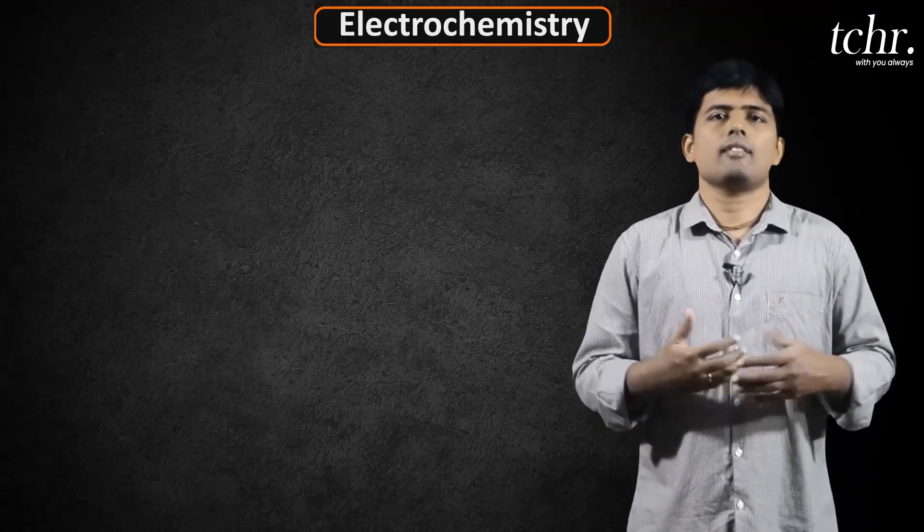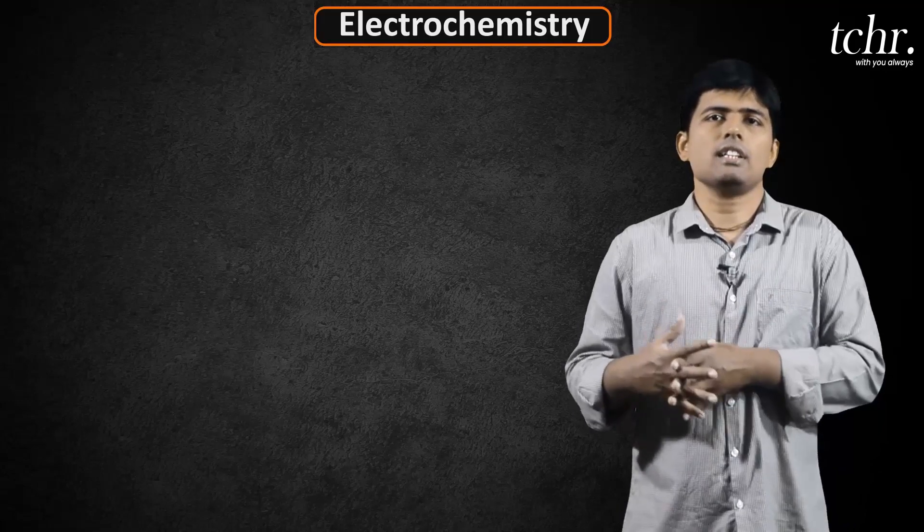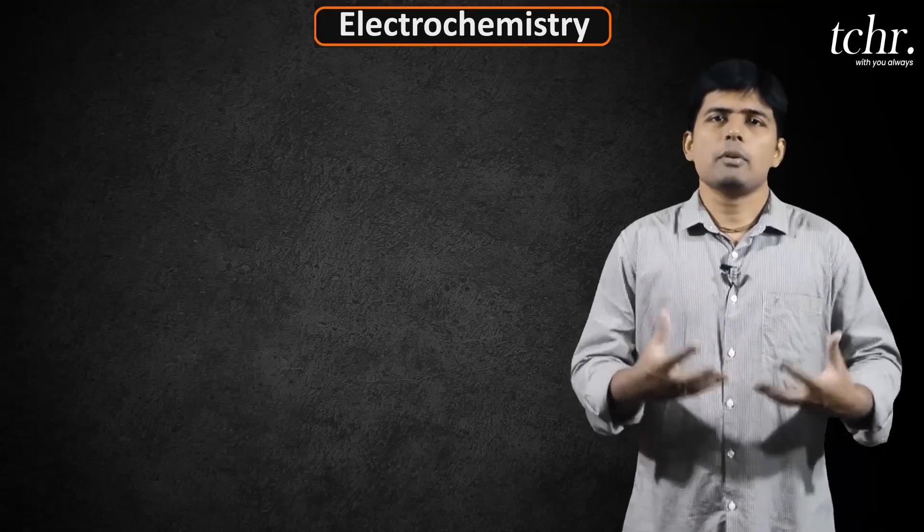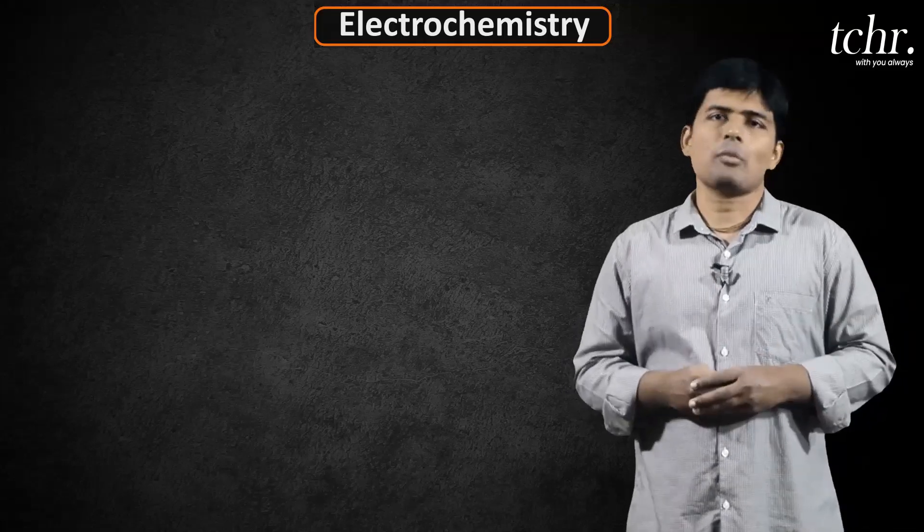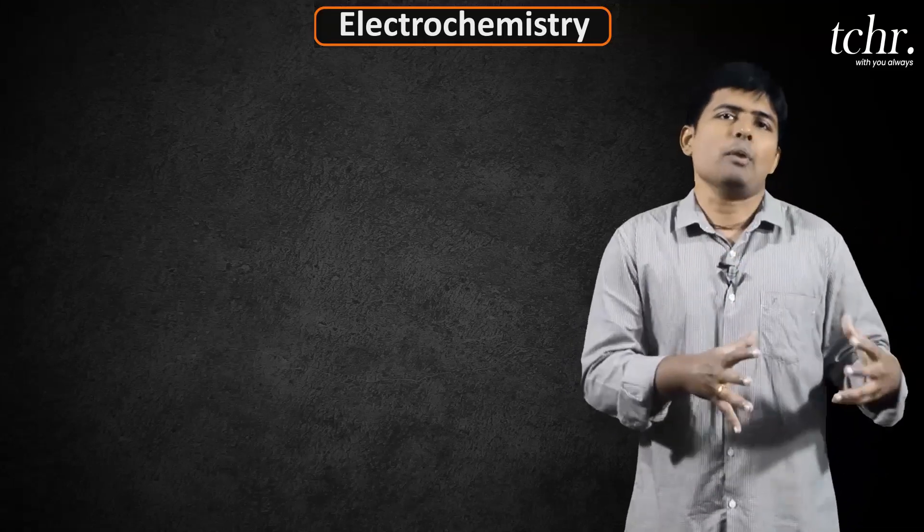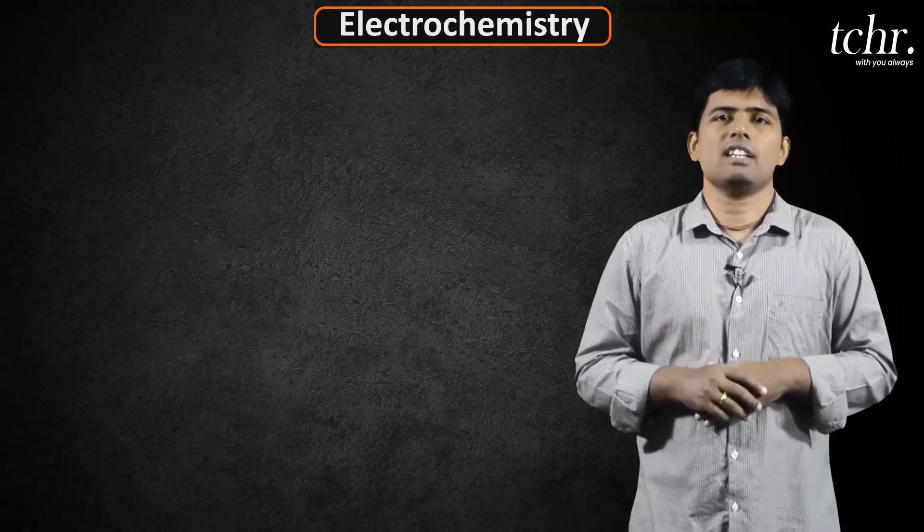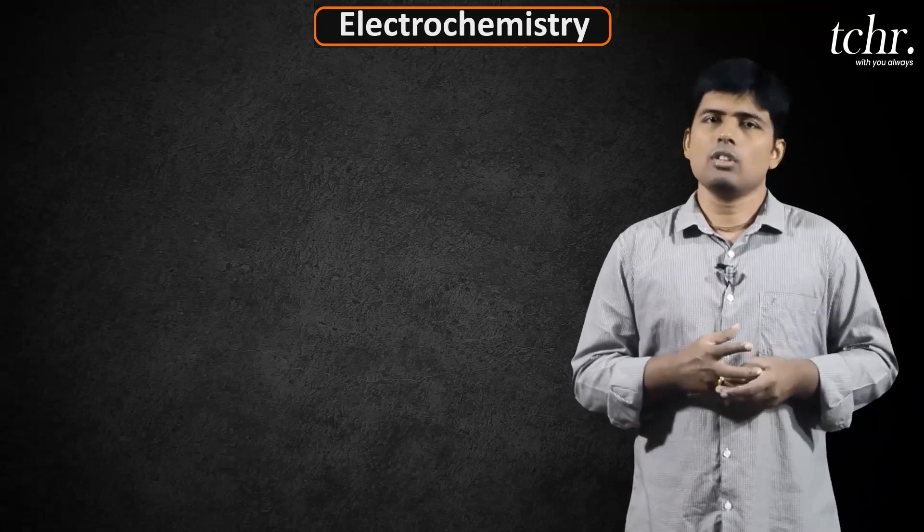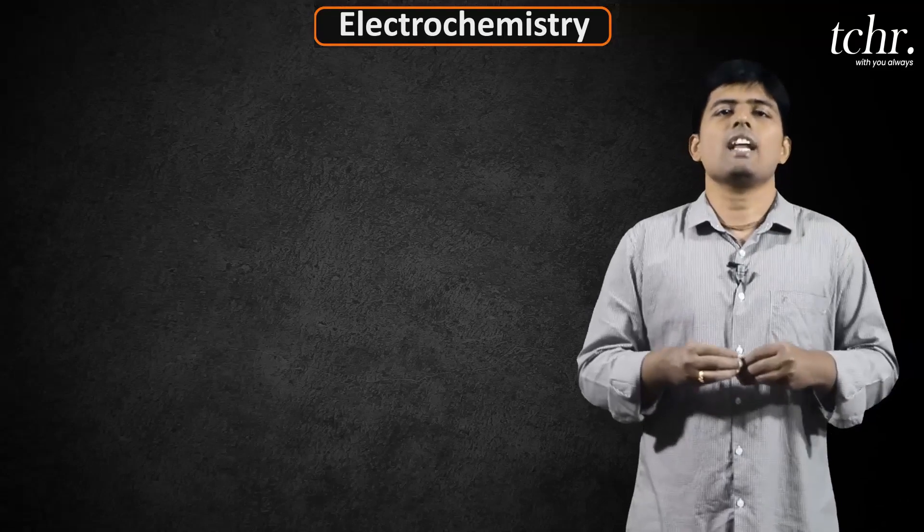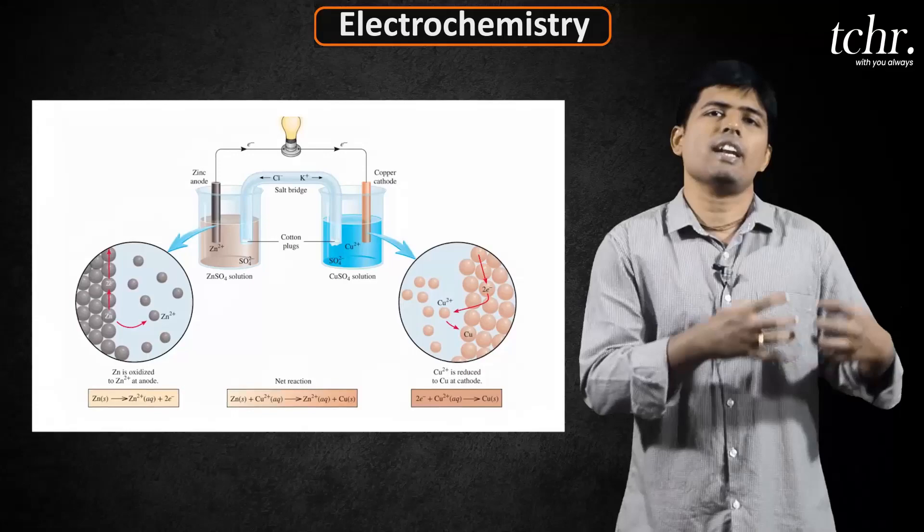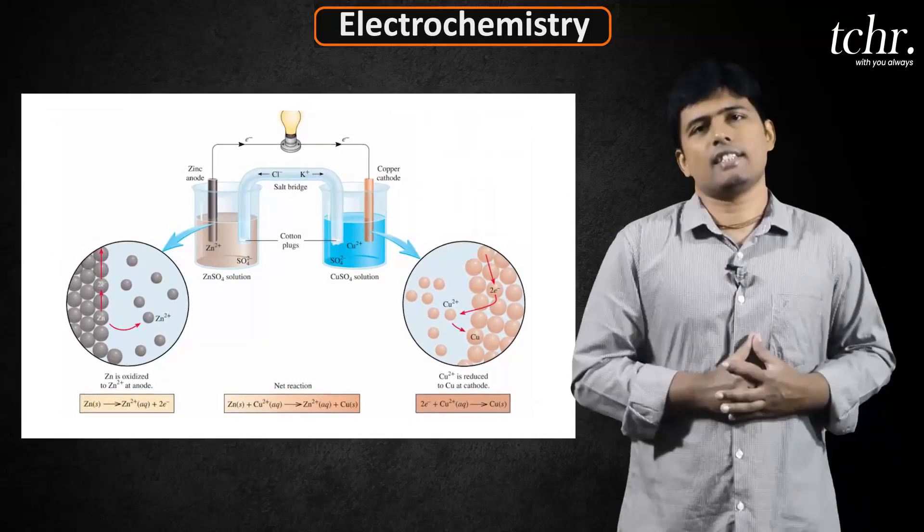As we already have discussed electrochemical cell, we have chemical reaction energy converted to electricity. The setup in which this particular process takes place is electrochemical cell. This is called galvanic cell. The simplest galvanic cell which we study is Daniel cell. Let us understand the phenomena of electrochemical cell using Daniel cell.